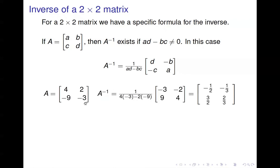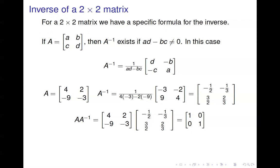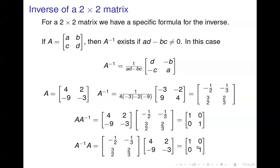For example, here's the matrix A. If we look at AD minus BC, that's 4 times negative 3, so negative 12, minus negative 9 times 2, which is negative 18. So negative 12 minus negative 18 equals negative 12 plus 18, which is 6. So we're dividing by 1 over 6. Then we swap the 4 and the negative 3, and negate the negative 9 and 2. Multiply that out and we get the inverse of A. You can check: multiply A times A inverse, you get the identity matrix, and A inverse times A also gives the identity matrix.